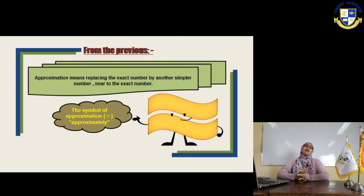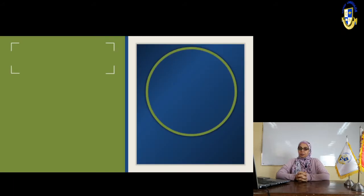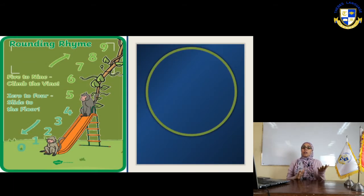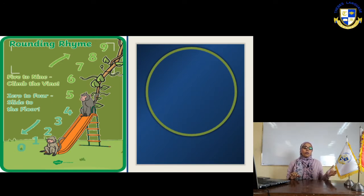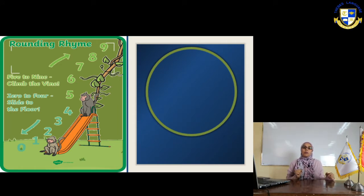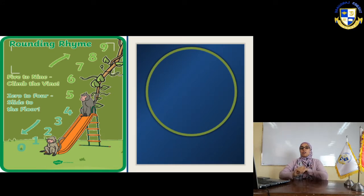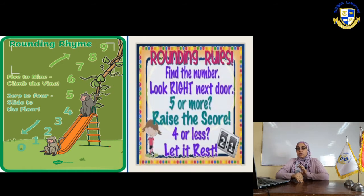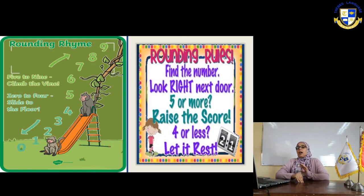We have the rounding rhyme. Numbers are classified as strong or weak. Strong numbers are from 5 to 9, and weak numbers are from 0 to 4. The rhyme is: 0 to 4, slide to the floor. 5 to 9, climb to the vine.